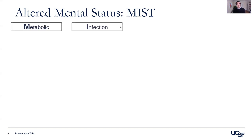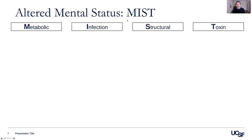The M stands for metabolic, the I for infections, the S for structural, and the T for toxins.